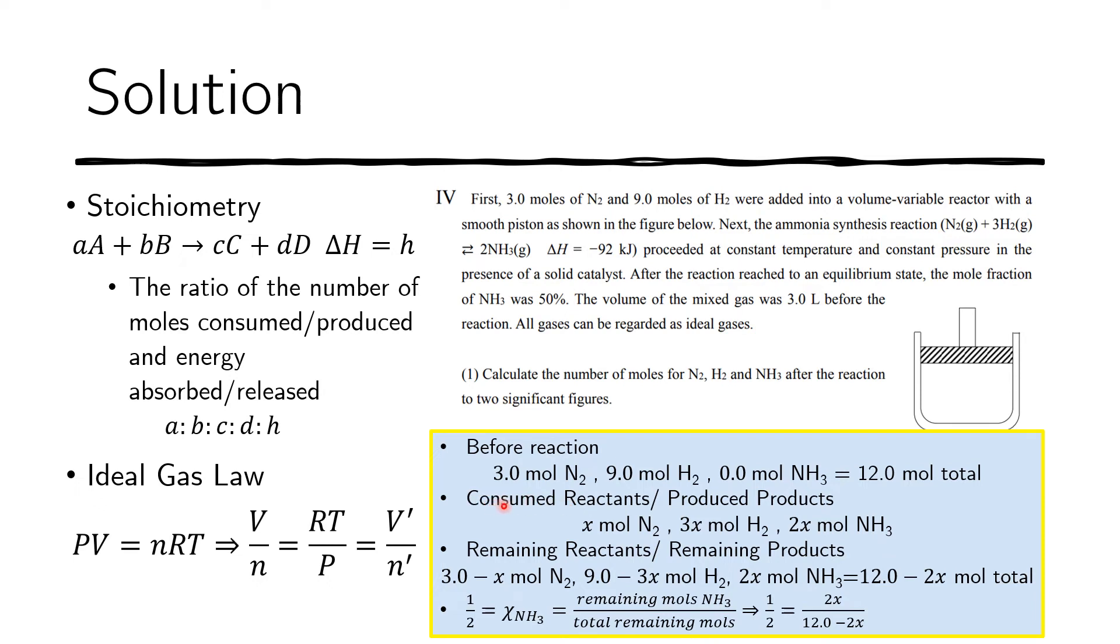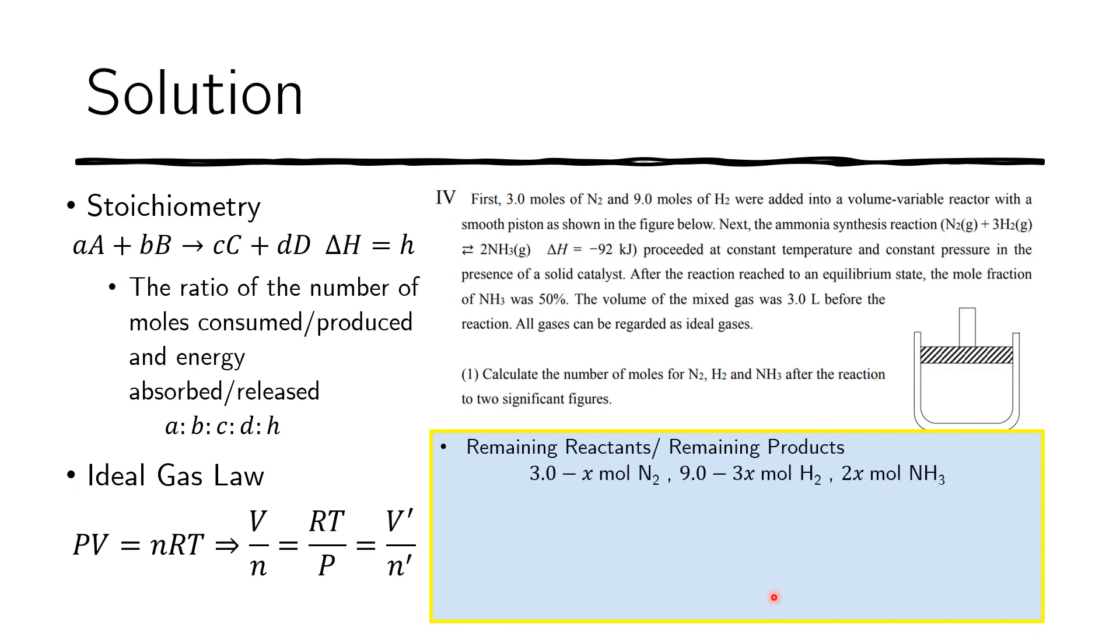We will know how much was consumed. This is pretty straightforward. You just multiply both sides by 2 and 12.0 minus 2x, so we will get the following. This is what we get from doing the multiplication. It's easy to solve. We get that x equals 2.0.